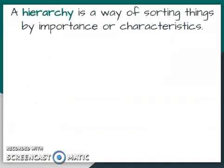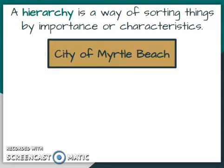Basically, what a hierarchy is — it is a way of sorting things by importance or characteristics. Now, one way we could sort people is by where they live. All of you probably live in the city of Myrtle Beach, as well as your brothers and sisters and many of your friends and family. What a hierarchy can do is allow us to be a little bit more specific to describe someone.